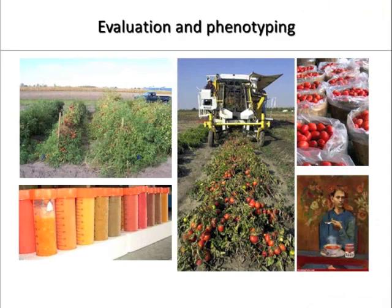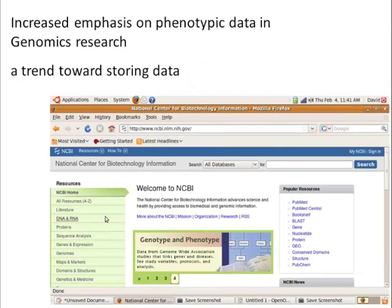What I'm going to do now is talk about evaluation and phenotyping, and I'll give some specific examples in tomato — but it's the general concept of trying to make our phenotyping more objective and more quantitative. Genomics has introduced this concept of storing data for communities, and it's now gotten to the point in human genetics and genomics where there is an emphasis on also storing phenotypic data. That trend is moving rapidly into plant sciences and plant breeding. It's going to get to the point where if you want to publish a mapping study, you are going to have to make your phenotypic data available in some sort of a database format.